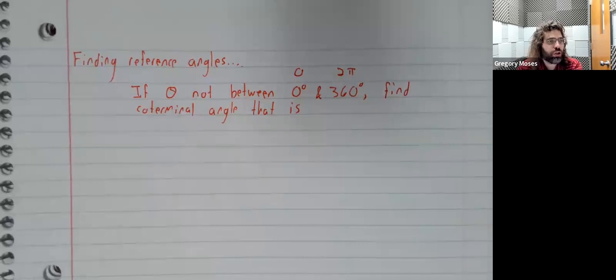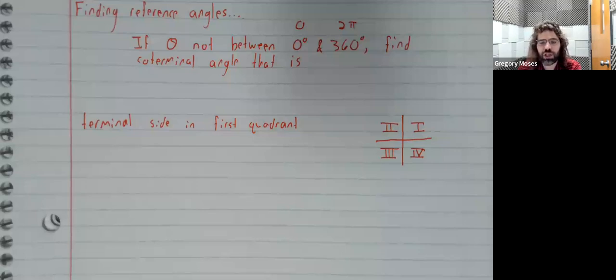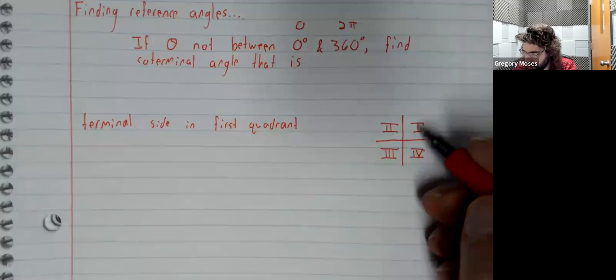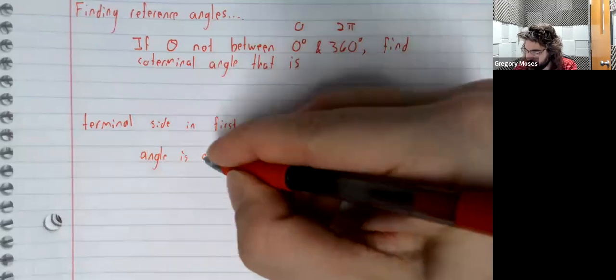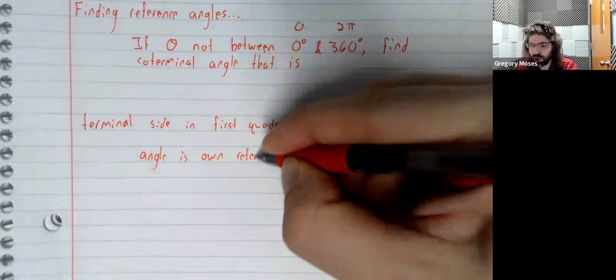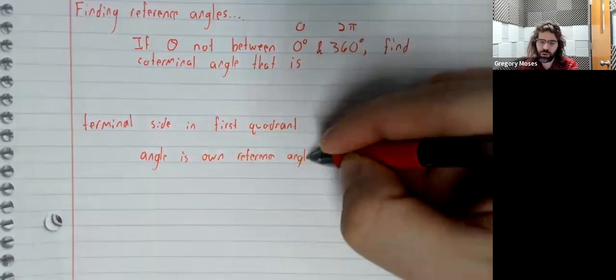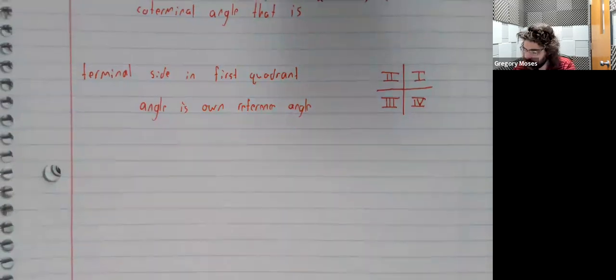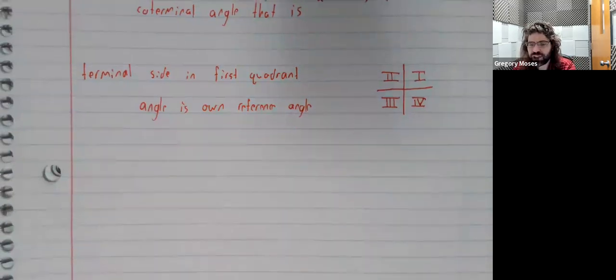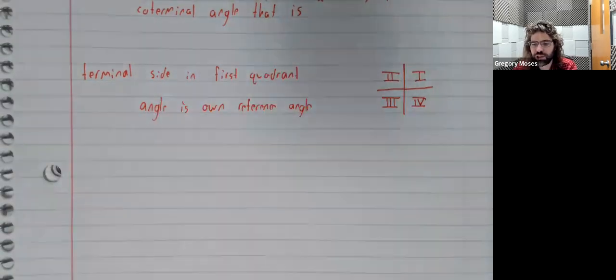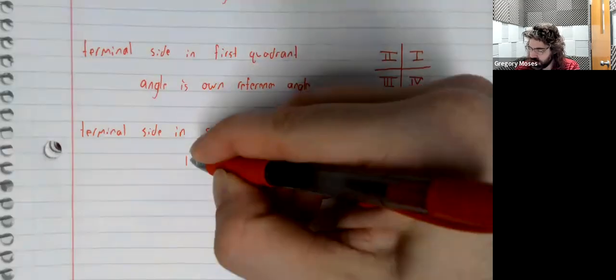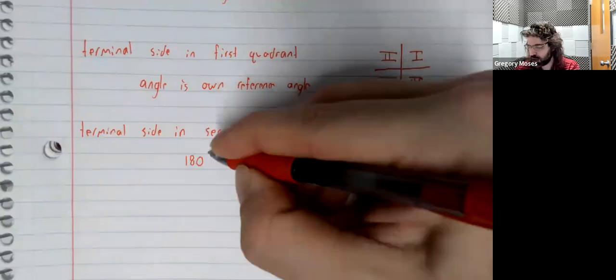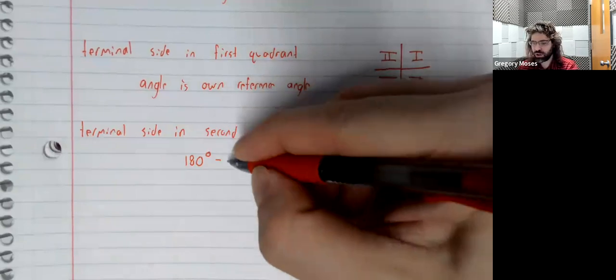And then you look at where the terminal side ends up. If the terminal side of the angle ends up in the first quadrant, then the angle is its own reference angle, and there's nothing for you to do. If the terminal side is in the second quadrant, then the reference angle is 180 degrees minus the angle in question.